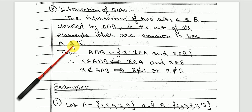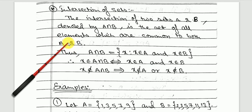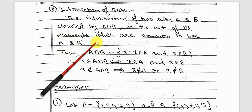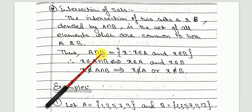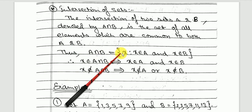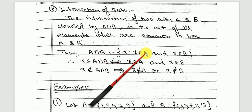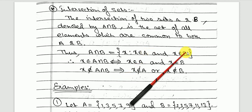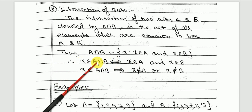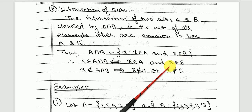So if you are given two sets A and B and asked to find the intersection, you will write a set which contains only the common elements in both sets. Mathematically, A intersection B is the set of all elements x such that x is in A as well as in B.